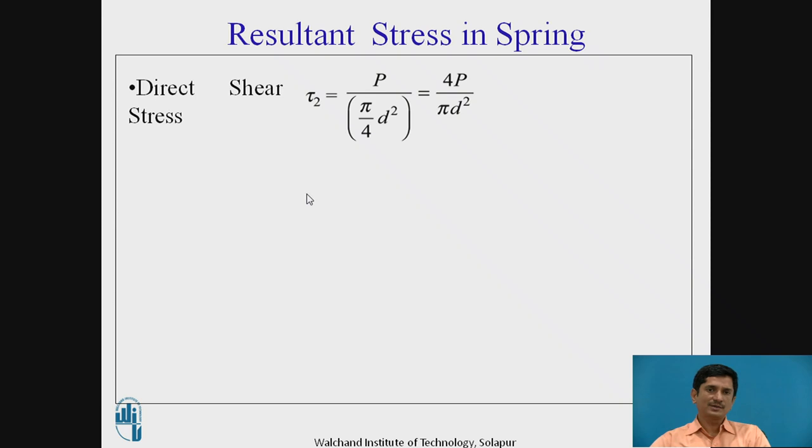Direct stress. As we have established the relation tau 2 equals force upon the cross section of the spring, which is pi by 4 d square. We can simplify and rewrite it in the form of some readjustments. 8 if I multiply with 0.5 it is nothing but 4. If I multiply numerator and denominator by D, I can cancel that effect. This d and d cube in the denominator is equivalent to the d square in the denominator. That means 4P upon pi d square is equivalent to 8PD upon pi d cubed multiplied by 0.5 d divided by capital D.